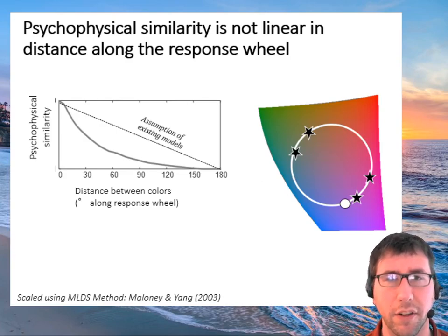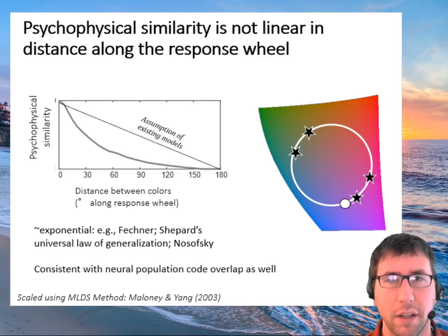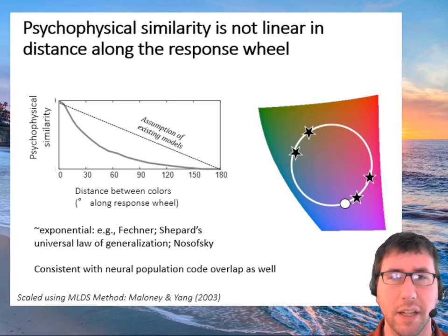You find similarity near the target is very high, but it falls off very quickly, nonlinearly quickly, so that it falls off approximately according to an exponential. And this shouldn't be a surprise, this is just like discriminability in Fechner's Law or Shepard's Universal Law of Generalization. It's also consistent with neural population codes. Purple shares almost no neural overlap in the neurons that code for it with either yellow or green, even though it's closer to one than the other on the wheel.